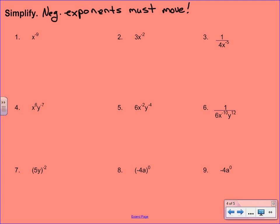Wherever our negative exponent is, it's going to move — if it's on top, it's going to go to the bottom; if it's on the bottom, it's going to go to the top. For x to the negative 9th, I can turn that into a fraction by just throwing a 1 underneath it. That negative exponent has to move to become positive, so it shifts to the denominator. In number 2, we see a negative exponent, but it's only on the x. That 3 to the 1st is going to stay — it's not a negative exponent, it doesn't move. And then that x to the negative 2nd is going to shift down to the denominator and become positive. Number 3 is similar: our only negative exponent is on that x and that x is in the denominator. The 1 in the numerator stays put, we bring up that x to the 5th power to join it in the numerator, and that 4 on the bottom stays put because it had a positive exponent.